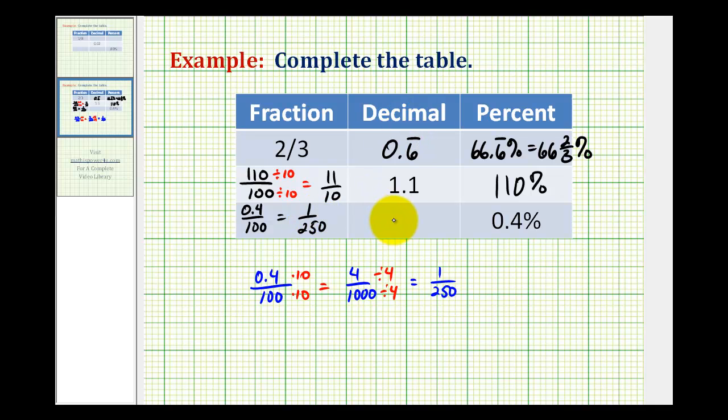Now to determine the decimal we can do this two ways. Looking at this fraction here of four thousandths, if we know our place values we could write the decimal form of this fraction: point zero zero four.